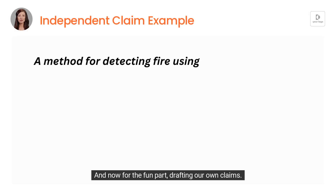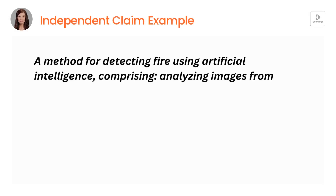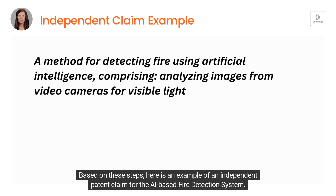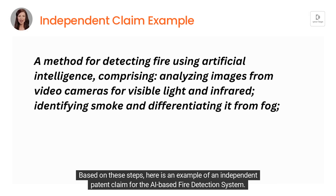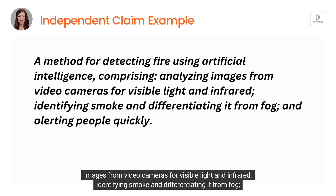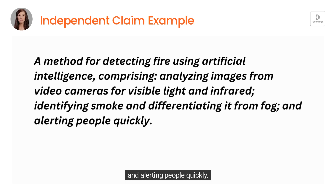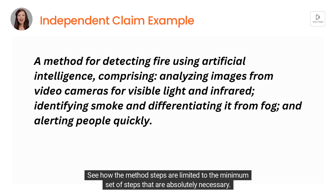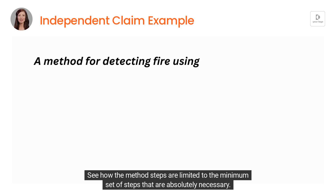And now for the fun part — drafting our own claims. Based on these steps, here is an example of an independent patent claim for the AI-based fire detection system. Claim one can be written as: a method for detecting fire using artificial intelligence, comprising analyzing images from video cameras for visible light and infrared, identifying smoke and differentiating it from fog, and alerting people quickly. See how the method steps are limited to the minimum set of steps that are absolutely necessary.